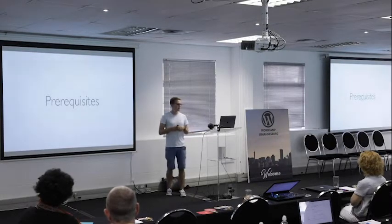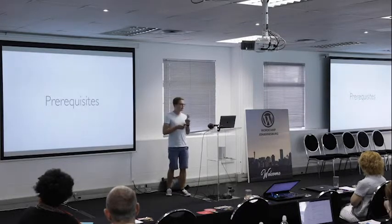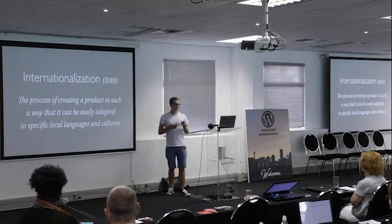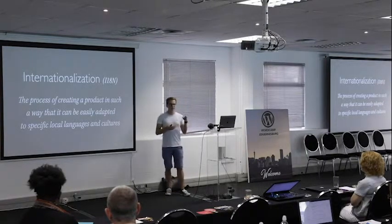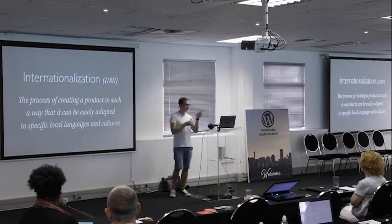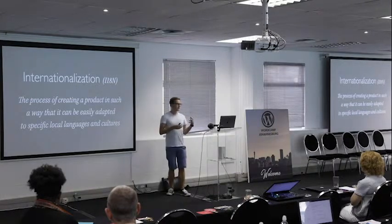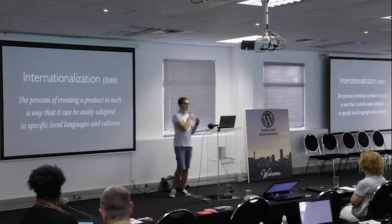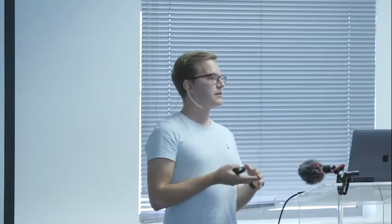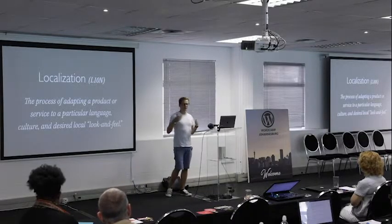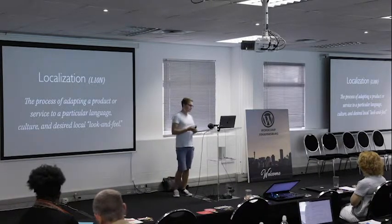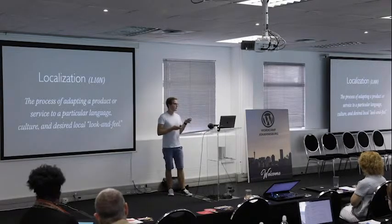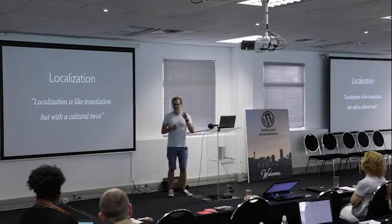Before we start, I want to quickly explain the terminology. The two terms you will hear most often in this talk: first is internationalization — a super long word, so usually we refer to it as I18n, where 18 is the number of letters missing in the middle. This is basically the process of making your project translatable, so your software can work in other languages like Spanish, Chinese, or German. But we don't say translation, because it's not just about written words — it's also about symbols, units, date formats, whether you drive on the left or right side of the road. This process is called localization, because you have to adapt to the local look and feel. In other words, it's like translation but with a cultural twist.